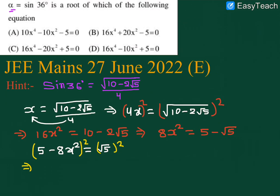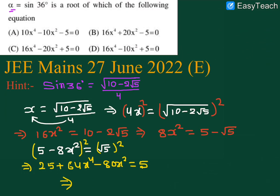Or we can write 5 − 8x² = √5. Now squaring both sides again, the LHS gives us 25 + 64x⁴ − 80x² = 5. After transposing 5 to the LHS and dividing by 4, we get 16x⁴ − 20x² + 5 = 0, which is given in option C.